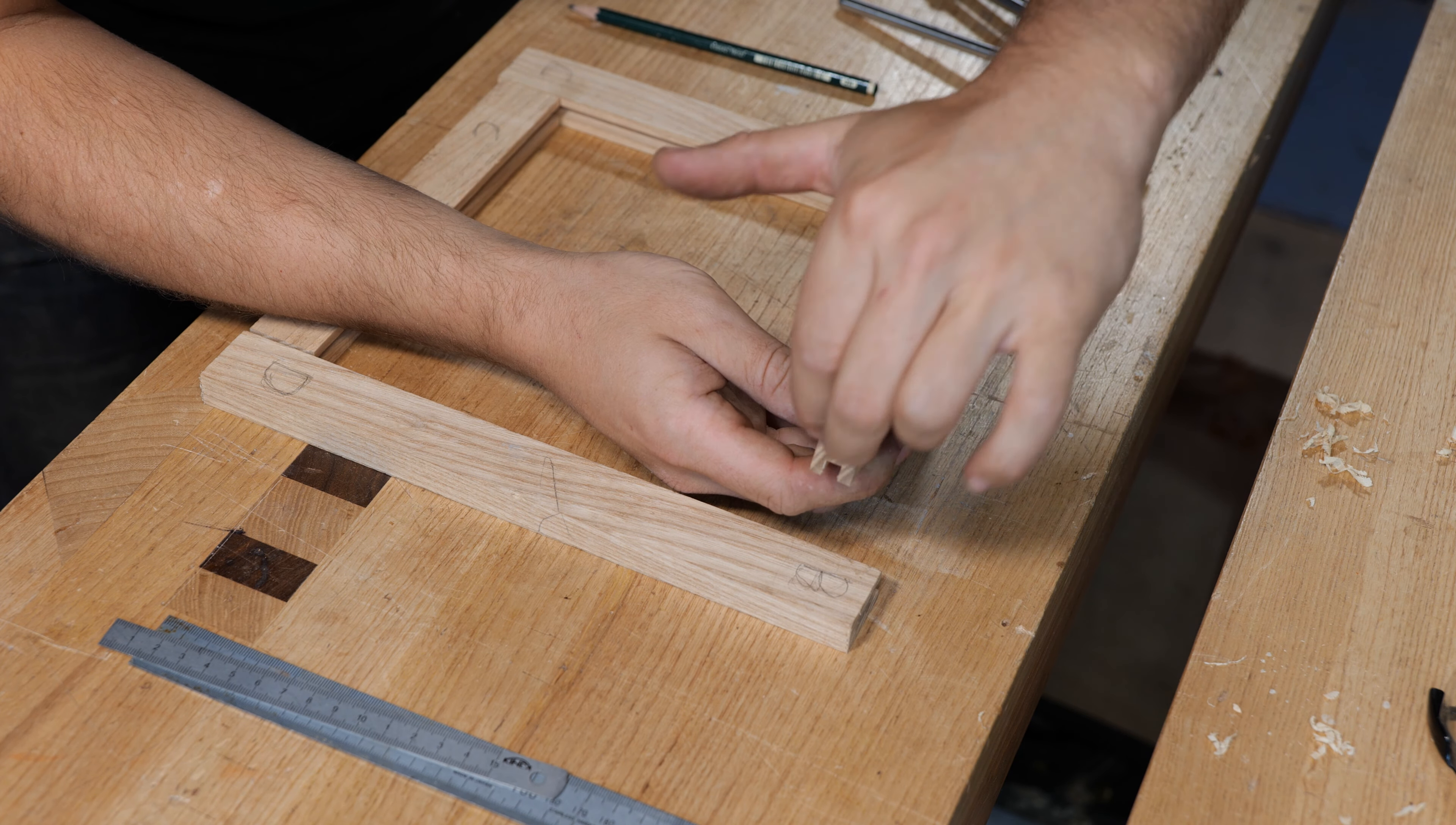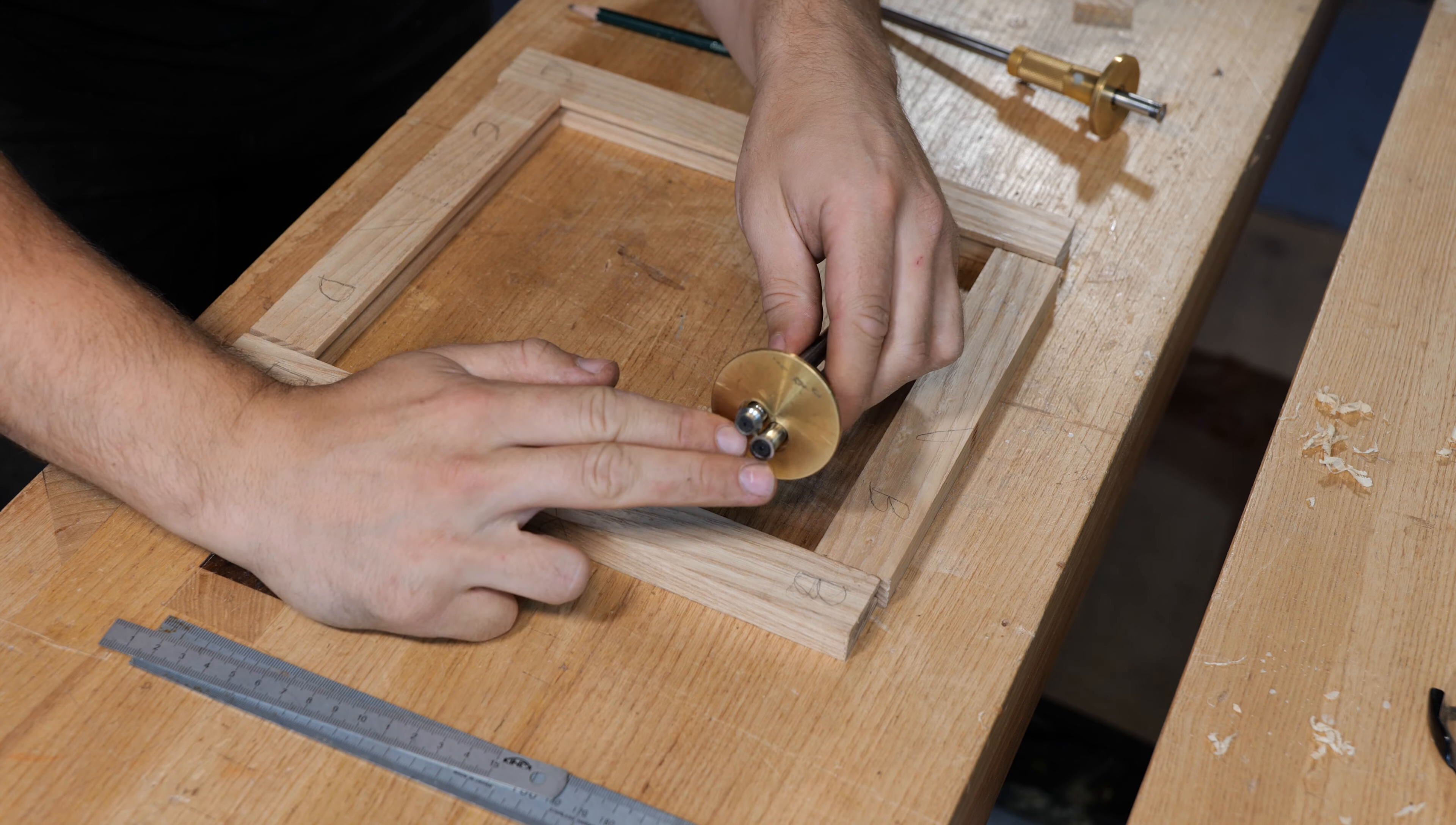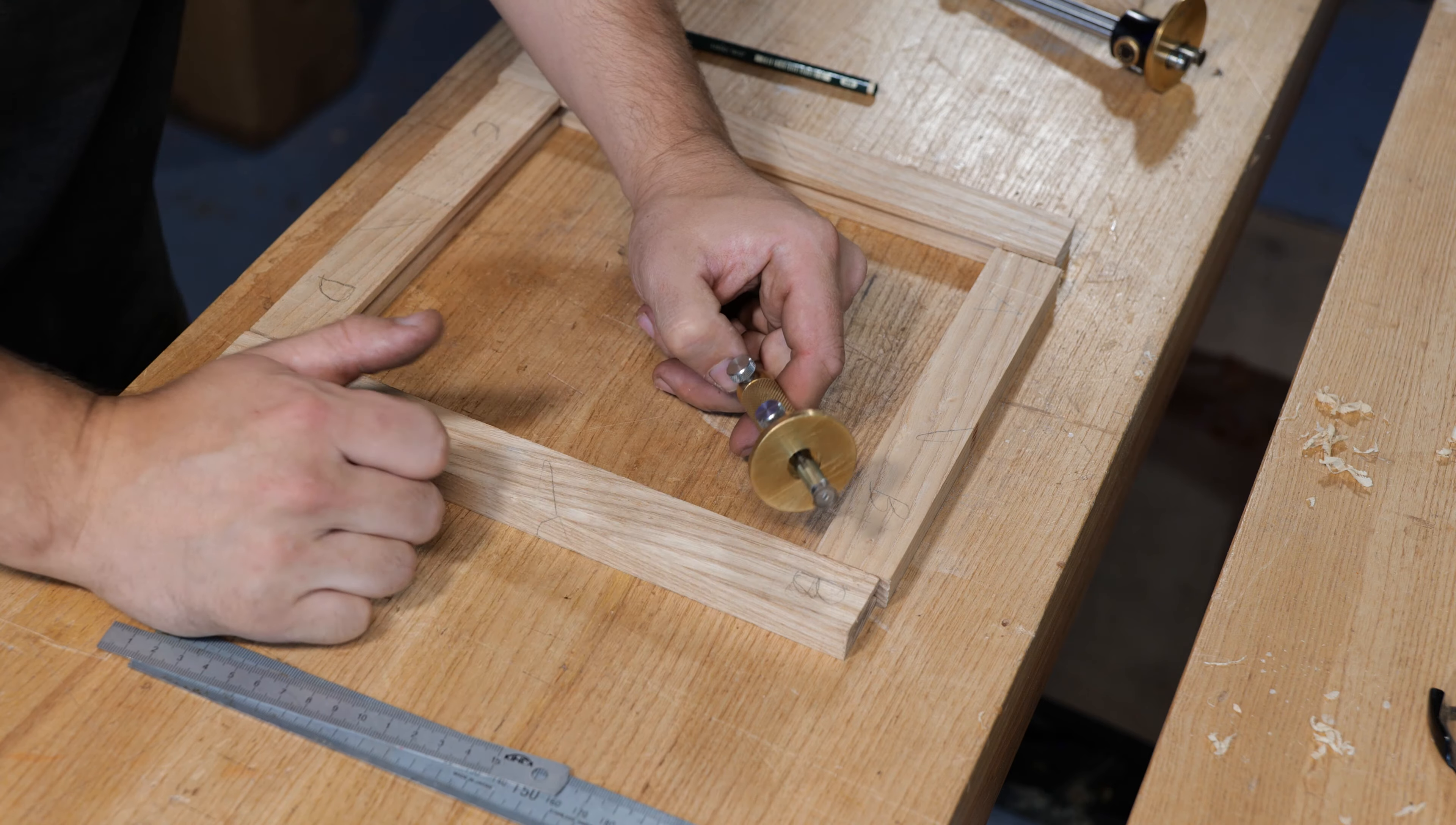Now we want to start scribing the two lines over the top of the tenon to give us the final width. You've got a couple of ways to do this. If you've got a mortise gauge you can lock the offset on both heads and scratch them around at once. If you've got a normal marking gauge, you just need to reset it halfway through. I'll show you how to do it this way because that's most likely what a lot of you have.